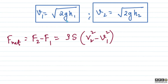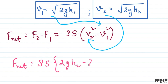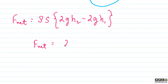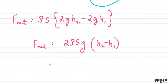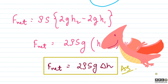Now substituting V1 and V2: F_net = ρS(2gh2 − 2gh1) = 2ρSg(h2 − h1). Since h2 − h1 = ΔH as given in the problem, the final answer is F_net = 2ρSgΔH. So this is our final answer. I hope, students, that you understood this solution very well.